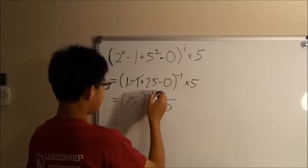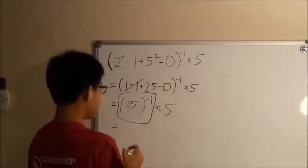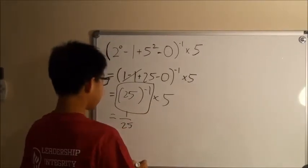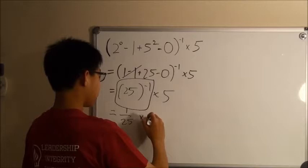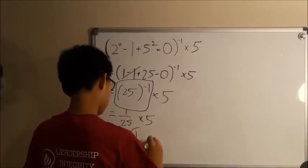Next, 25 to the power of negative 1 is equal to 1 over 25, and then finally multiplying it by 5, we get 1 fifth, which is our final answer.